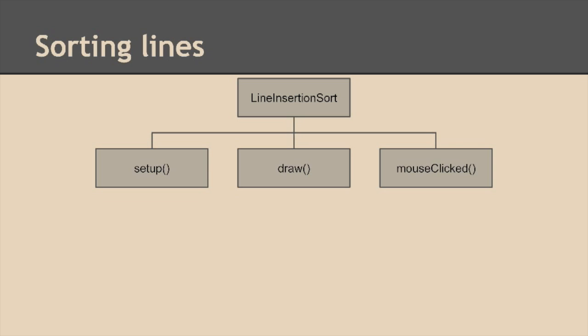Now we can look at the methods that we'll need for this particular program. We'll start with three built-in methods that we obviously need in this case. We need a setup method that's going to do the housekeeping chores like creating the size of the window. The draw method which will just display the contents of the array at those vertical lines that we just talked about. And a mouse clicked method which will basically sort the lines.